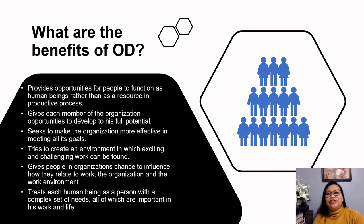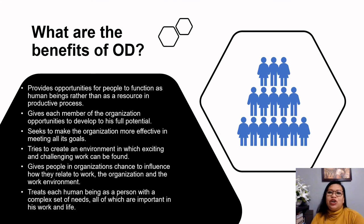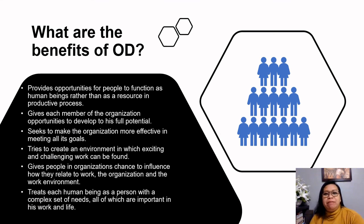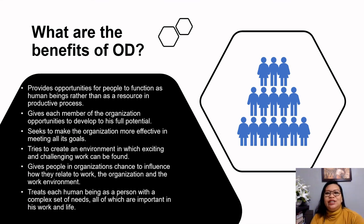For Margulies and Raya (1972), the benefits of OD are six-fold. It provides opportunities for people to function as human beings rather than resources in a productive process. It gives each member of the organization opportunities to develop their full potential. It seeks to make the organization more effective in meeting all its goals. It tries to create an environment in which exciting and challenging work can be found. It gives people in organizations a chance to influence how they relate to work, the organization, and the work environment. And finally, it treats each human being as a person with a complex set of needs, all of which are important in his work and life.